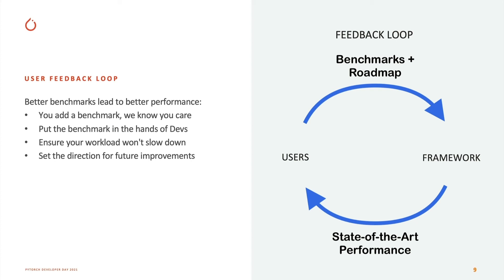As developers change PyTorch, they can see if their changes are regressing the performance of that model. They can dig into that model and ask how to improve performance for everyone who runs models like this one. This is the heart of a good, strong benchmarking ecosystem where the benchmarks are actually sent in by the users — so developers don't have to question whether a benchmark is real or fake, important or not, because you know someone told you it was important and put it in your hands.